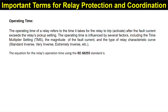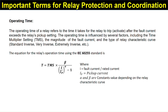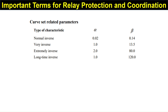The equation for relay operating time using the IEC 60255 standard is: T = TMS × β / ((I/Ip)^α − 1), where I is the fault current, Ip is the pickup current, and α and β are constants depending on the relay characteristic curve. For normally inverse characteristic, α = 0.02 and β = 0.14.